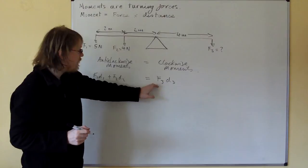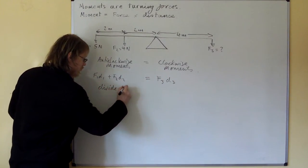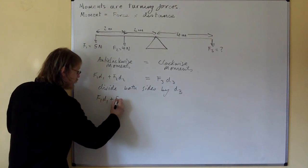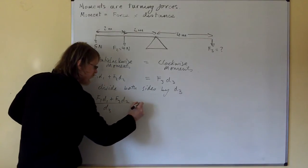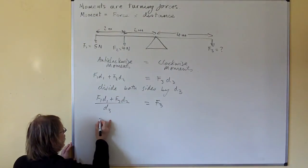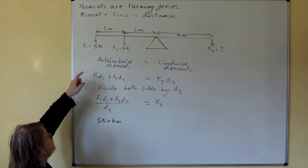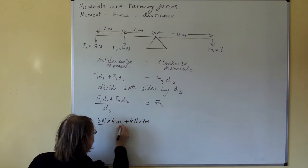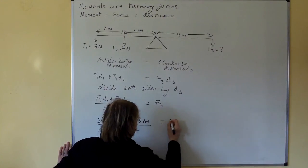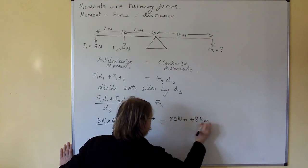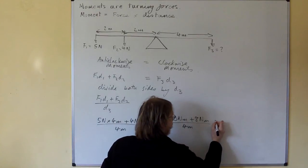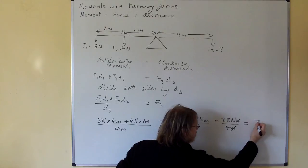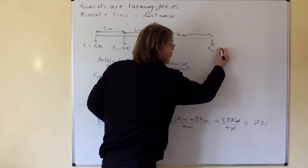Again, right. Now we're going to find F3. So we divide both sides by D3. OK, so that gives us F1 D1 plus F2 D2 all over D3 equals F3. Now let's put in our numbers. 5 newtons times 4 metres, because this 5 newton force is 4 metres from the pivot, plus 4 newtons times 2 metres, all over 4 metres, equals 20 newton metres plus 8 newton metres, all over 4 metres, equals 28 newton metres over 4 metres. The metres cancel, and we get 7 newtons. Our answer, F3, is 7 newtons.